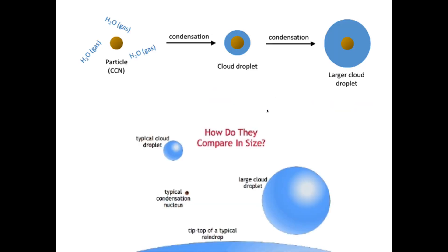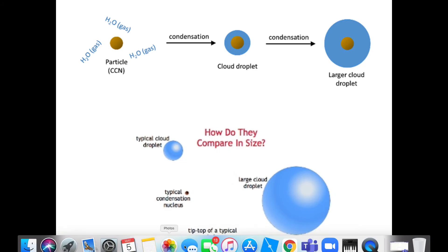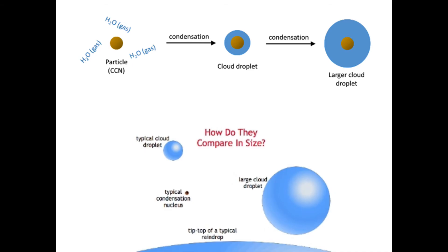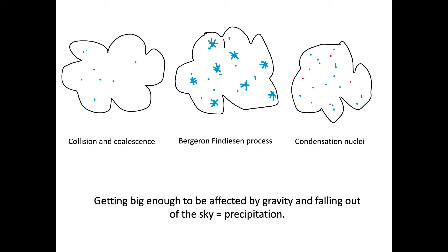Just a couple of diagrams to help with scale. A typical raindrop is two millimetres in diameter. Condensation nuclei are microscopic — we breathe them in without realising, they're that tiny. Cloud droplets are very small, which is why they're not affected by gravity. As you get collision and coalescence, or condensation around nuclei, gradually your cloud droplets get bigger. Generally they will only fall out of the sky once you get to about two millimetres — you don't need to remember that figure, but that gives you the sense of scale.